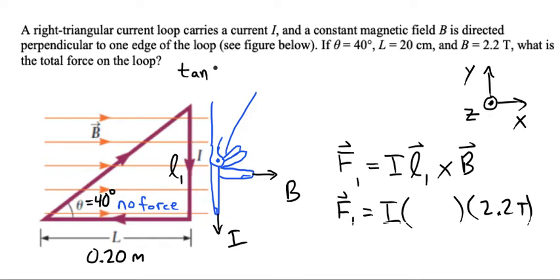We can use the tangent of 40. It's going to be L1 over L, so that's going to be L1 over 0.2. Now we can solve for the length L1. L1 is 0.168 meters.